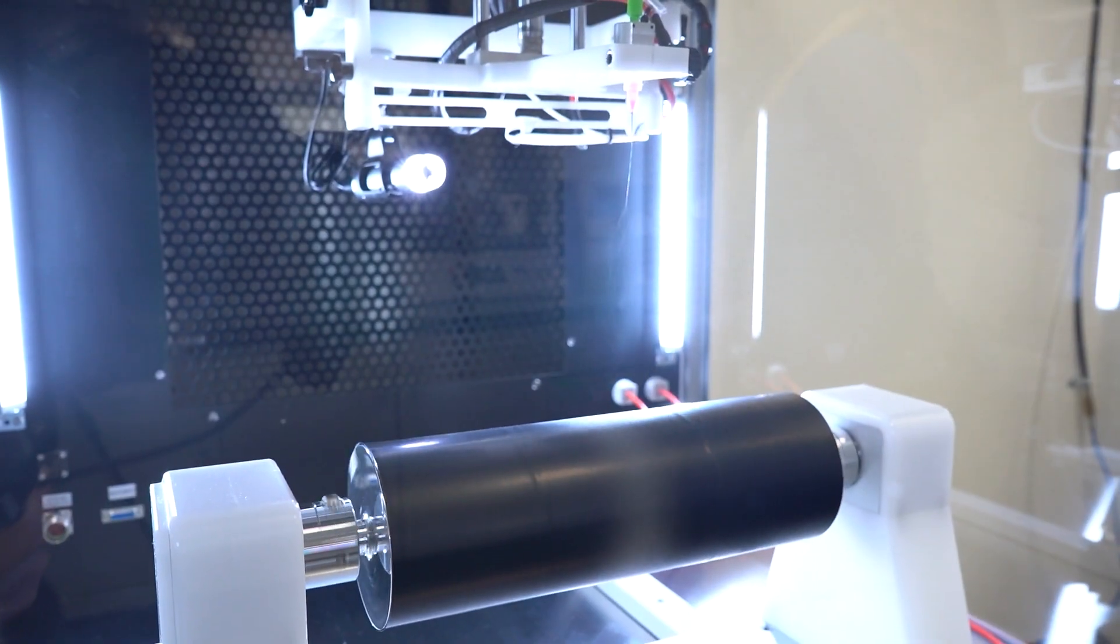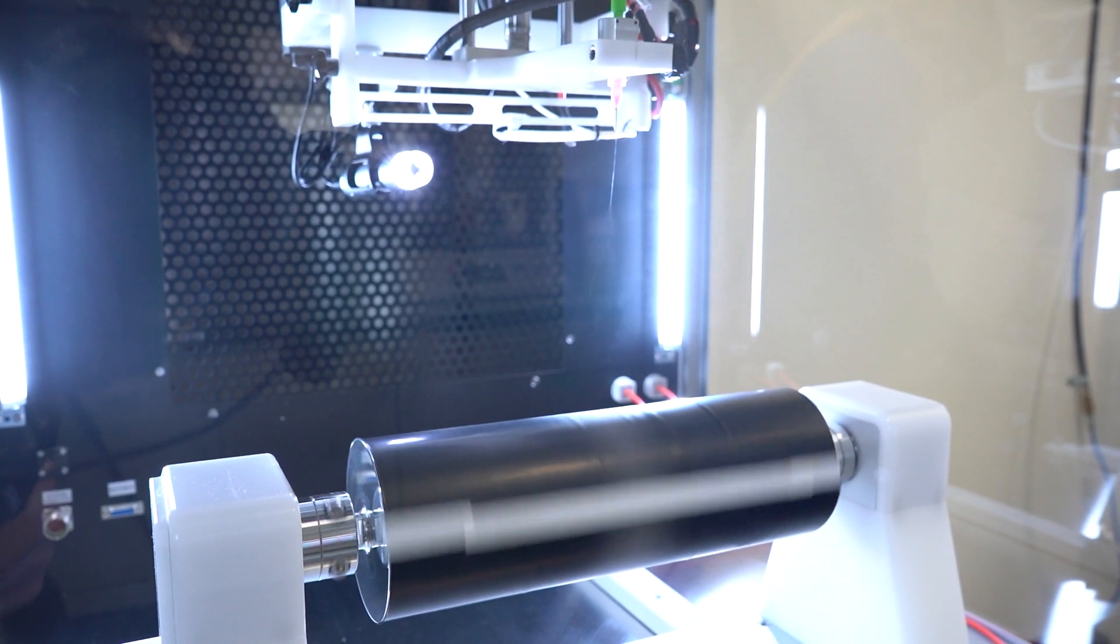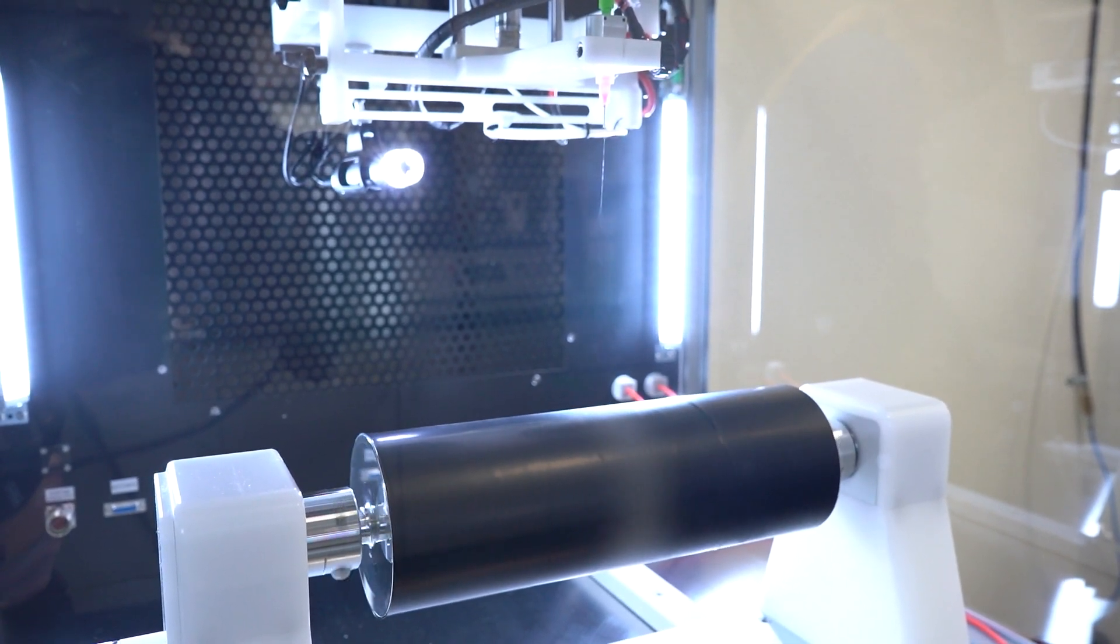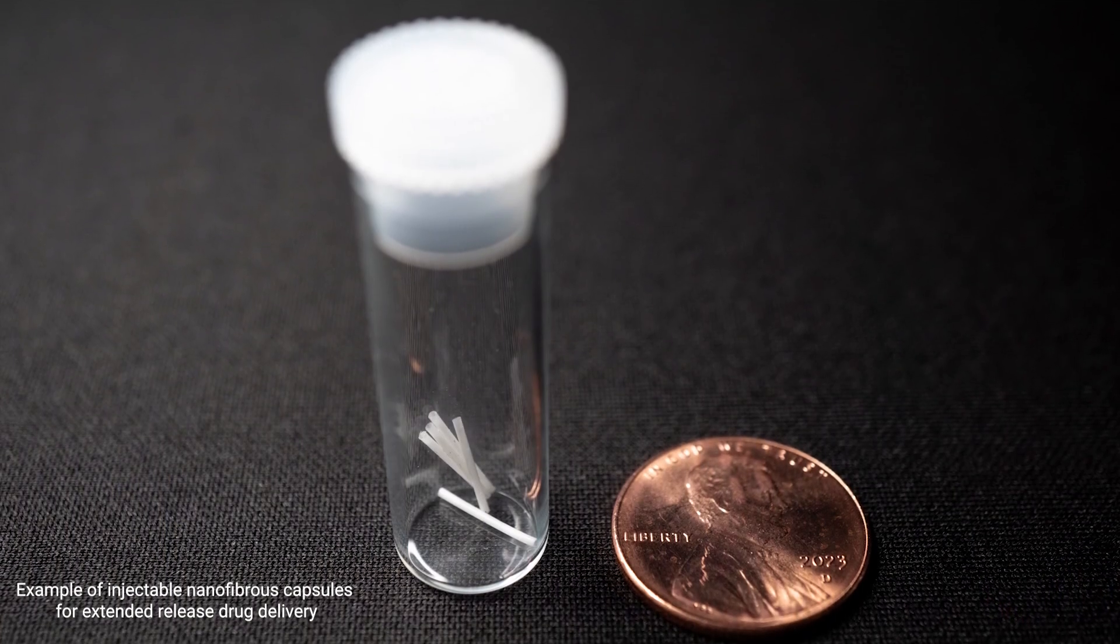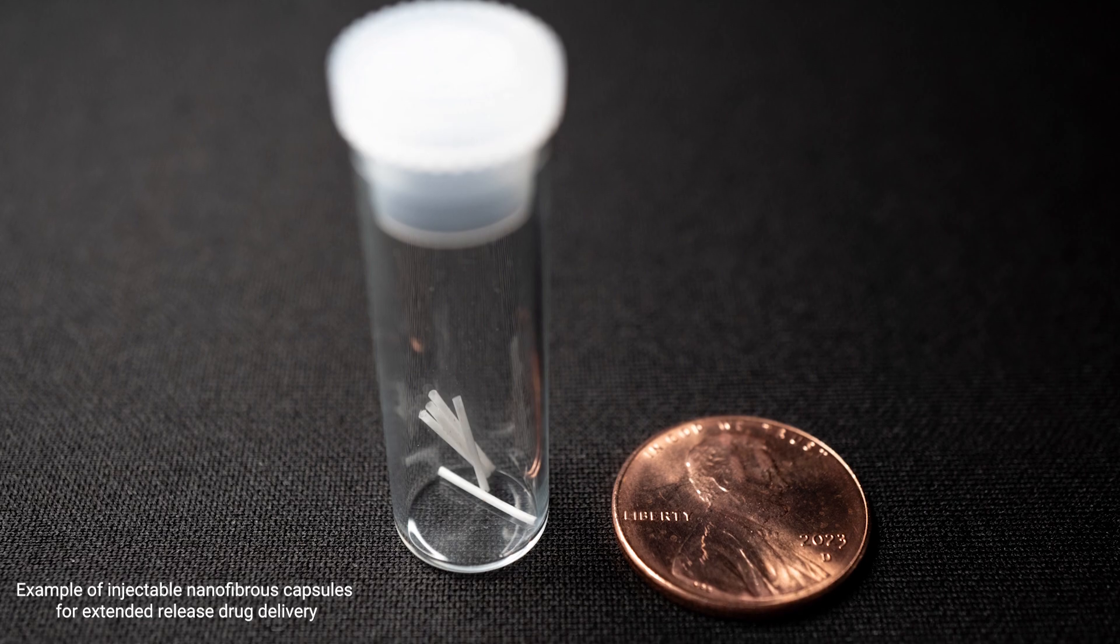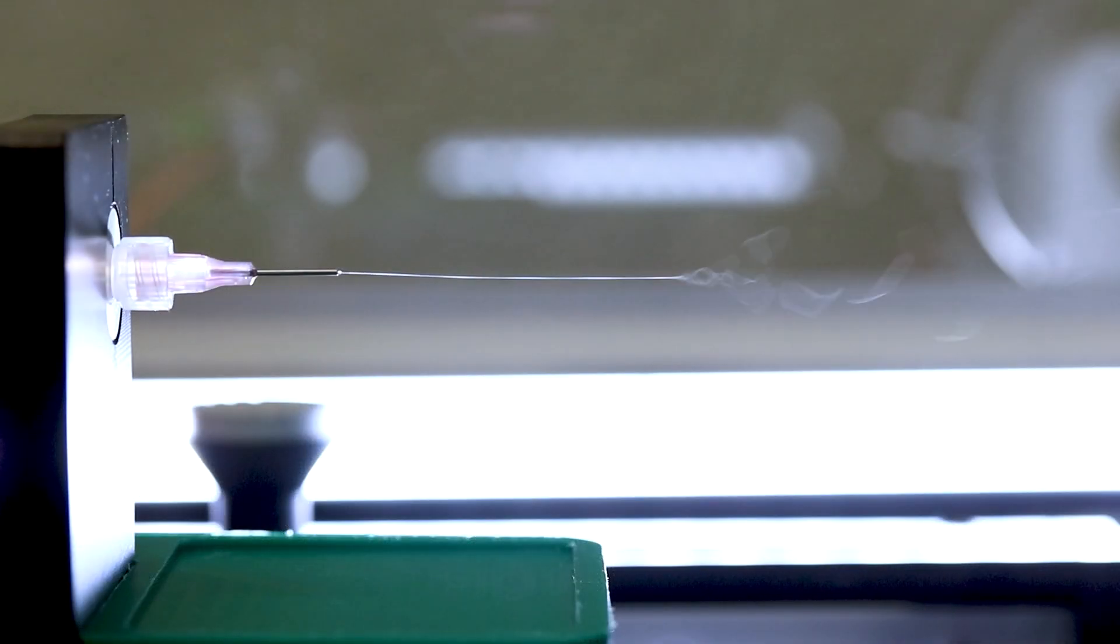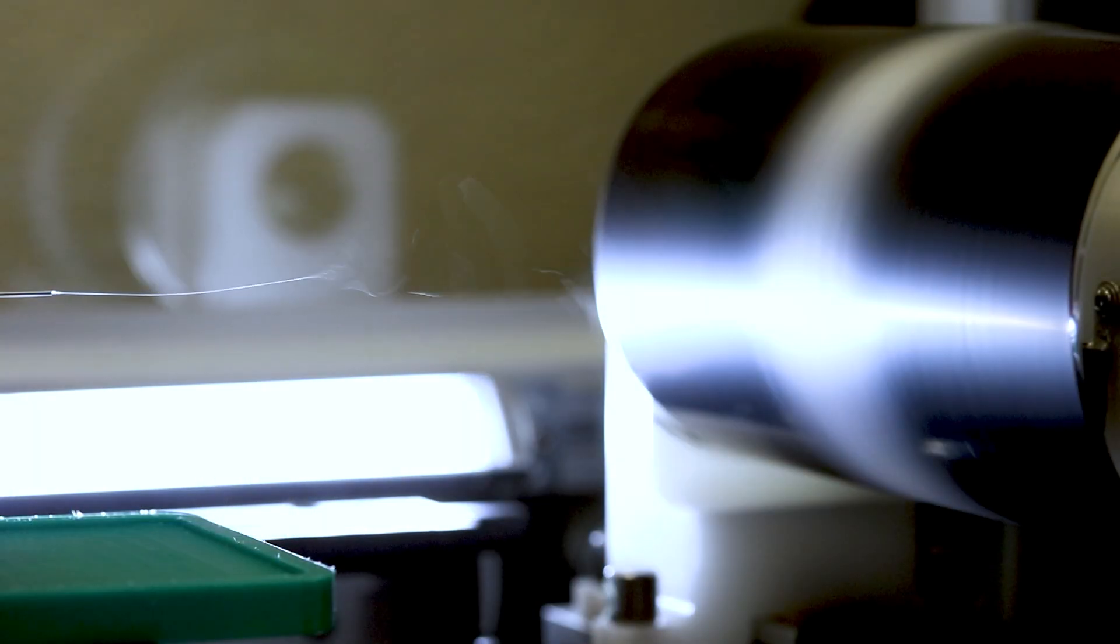As you may have seen from our previous videos, electrospinning is a unique and incredibly versatile technique used in a wide range of applications, from producing nanofibers for textiles to creating drug delivery systems. At its core, it's a process where a high voltage is applied to a solution, typically a dissolved polymer, causing it to eject a fine jet of solution. As the solution stream elongates and whips around, the solvent evaporates and we're left with solidified, ultra-fine fibers.